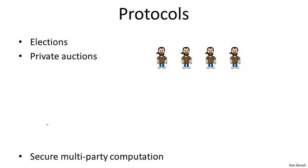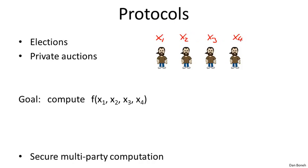This is an example of the more general problem called secure multi-party computation. Abstractly, the participants have secret inputs — in the case of an election, the inputs are the votes; in an auction, they're the secret bids. What they'd like to do is compute some function of their inputs. In an election, the function is the majority; in an auction, it's the second-highest value among the bids. The question is how to do this so the function's value is revealed but nothing else about the individual inputs is exposed.